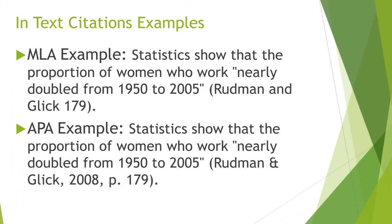Let's take a closer look at in-text or parenthetical citations. Whether you use APA or MLA, the idea is to include information such as the author's name, the source's publication date if it's APA, and the exact location of the information within the source material. In MLA, the in-text citation includes author's last names separated by the word 'and' followed by the page number. The APA example has the author's last name separated by an ampersand, then a comma, then the year, then a comma, then 'p.' and the page number. In both examples, the final period is placed after the parenthetical citation and not after the quotation marks.